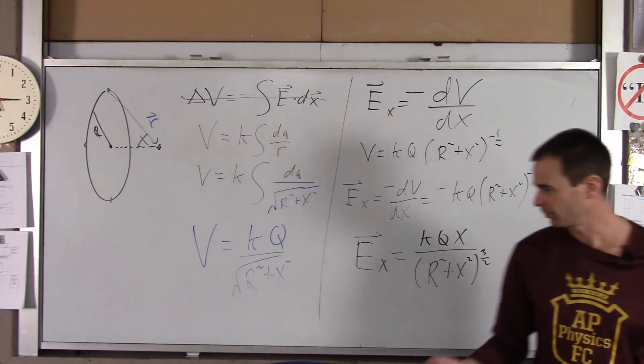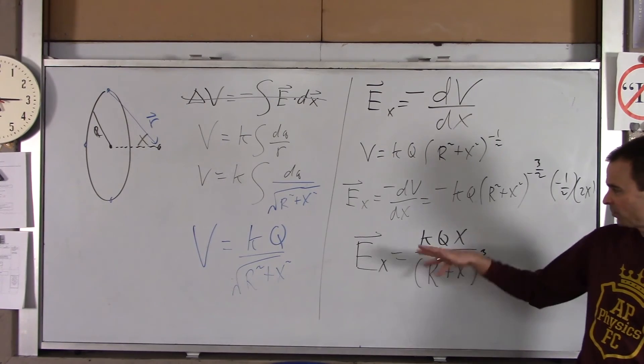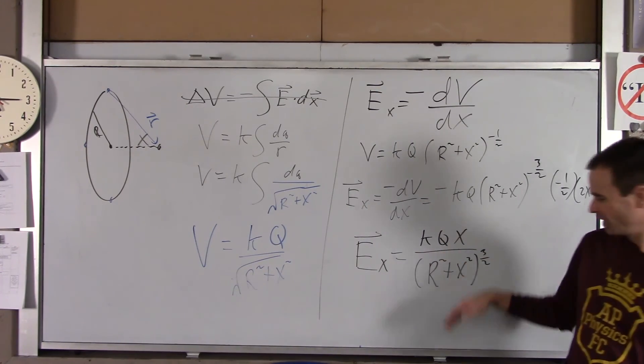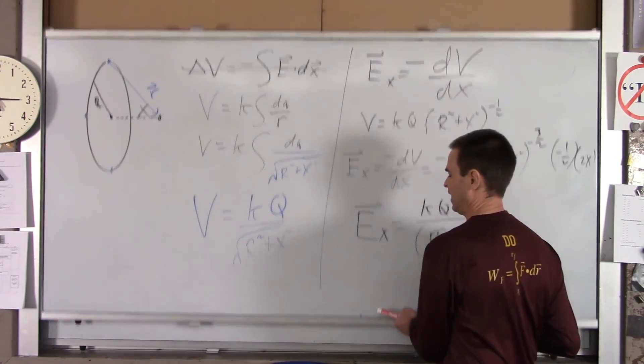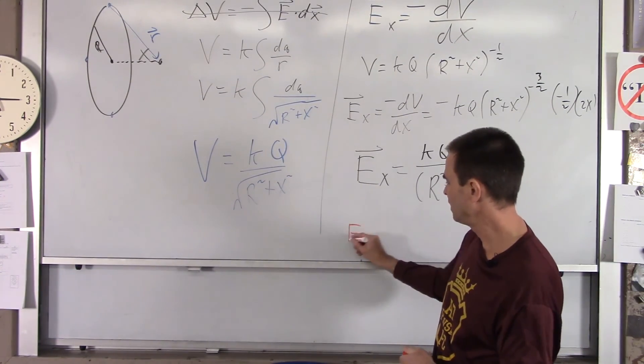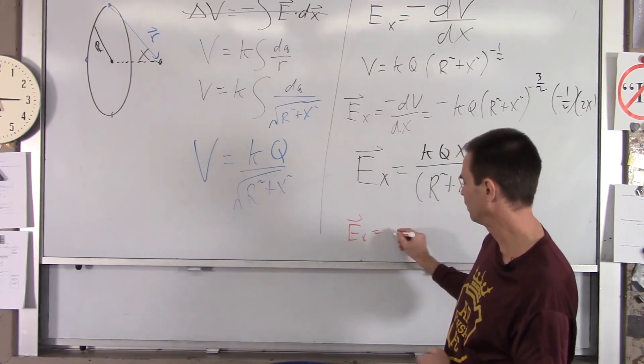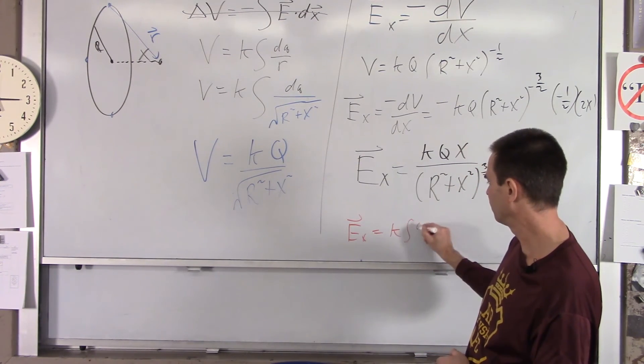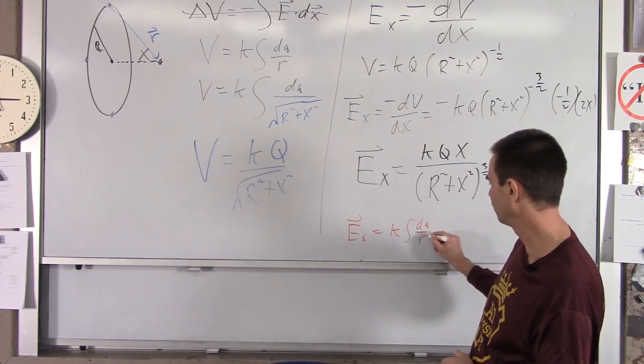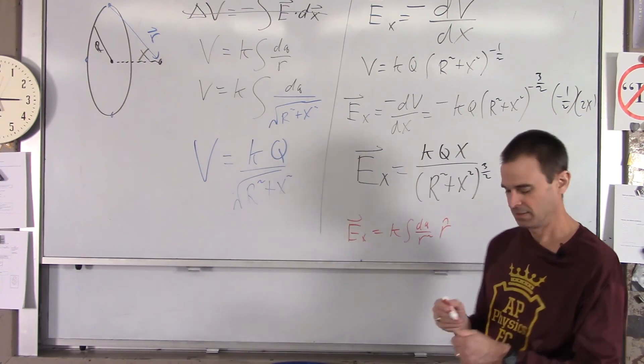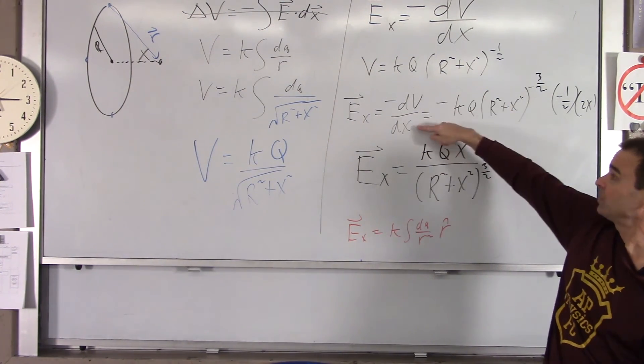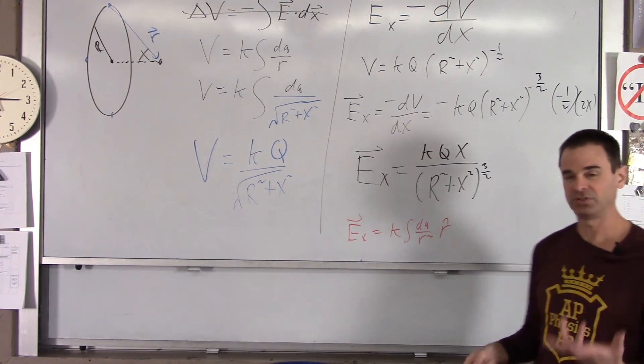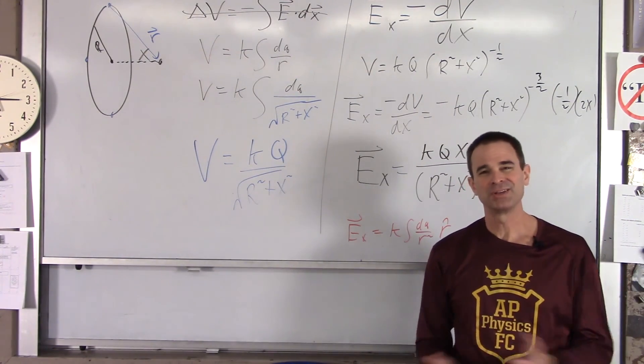If you recall from the previous chapter or a couple chapters ago, this was a little tougher to get doing the method that we did back then, which was, and I'll just remind you of that, we did E in the X direction was K, the integral of DQ over R squared R hat. So, a couple chapters ago, we were doing this. Well, now we use this to get the electric field, and it's much easier,